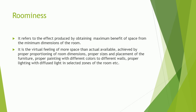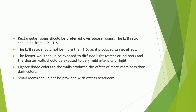Roominess refers to the effect produced by obtaining maximum benefit of space from the minimum dimensions of the room. It is the virtual feeling of more space than actually available, achieved by proper proportioning of room dimensions, proper sizes and placement of furniture, proper painting with different colors on different walls, and proper lighting with diffused light in selected zones. Rectangular rooms should be preferred over square rooms; the L/B ratio should be from 1.2 to 1.5 and should not exceed 1.5 as it produces a tunnel effect. Longer walls should be exposed to diffused light and shorter walls to very mild intensity of light. Lighter shade colors produce more roominess than dark colors. Small rooms should not be provided with excess headroom.